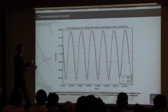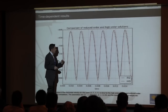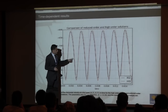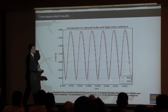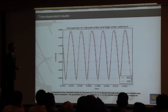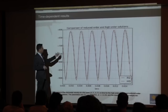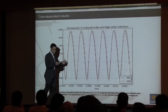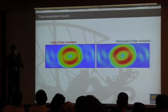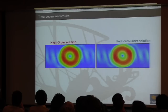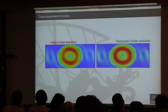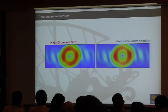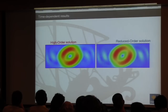A comparison between time-dependent oscillatory solutions from the reduced order model and the high-order spectral method shows good agreement in amplitude and phase. Visually, the solutions computed with the spectral method at order 20 and the reduced order solution using test basis functions compare favorably.